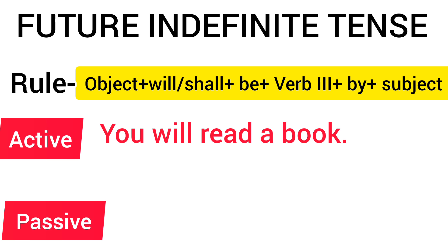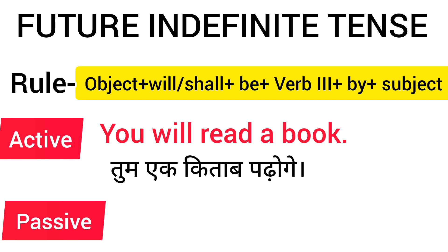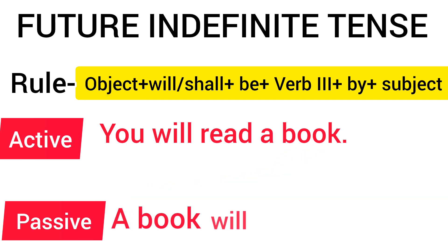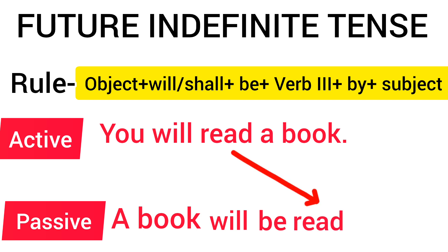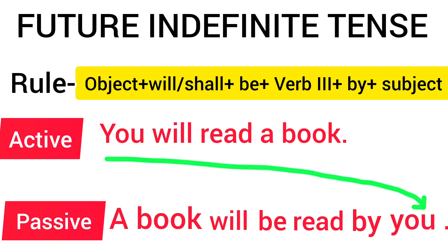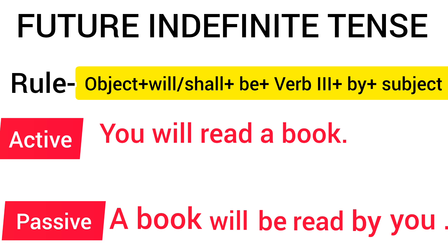Let's take one more sentence: 'You will read a book.' (तुम एक किताब पढ़ोगे.) So the object is 'a book'. We add 'will' — 'a book will' — then 'be' — 'a book will be' — and the verb's third form: read's third form is 'read' itself. So: 'A book will be read', then 'by'. The subject is 'you', and 'you' stays 'you' as object. Full sentence: 'A book will be read by you.'